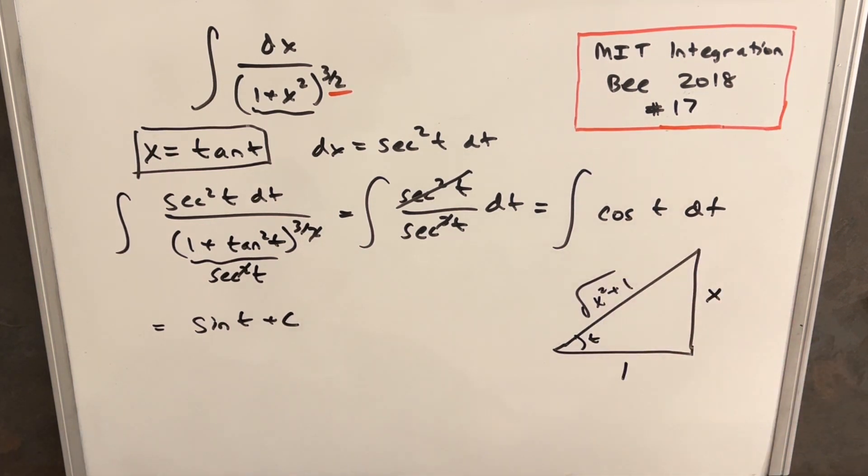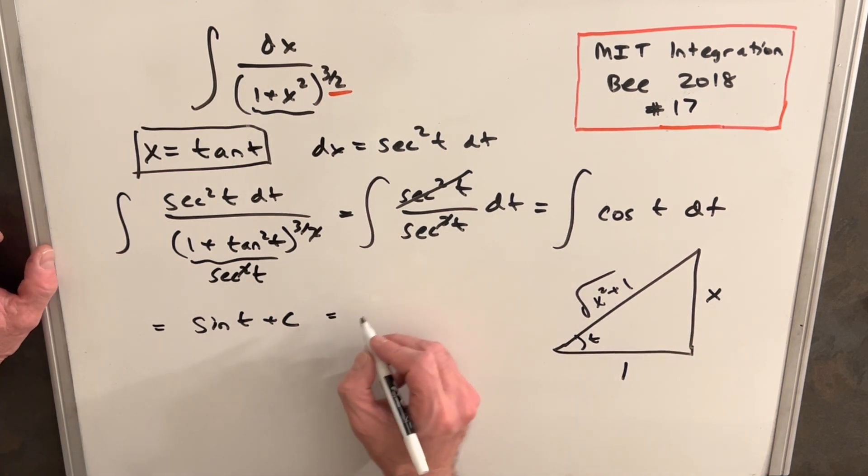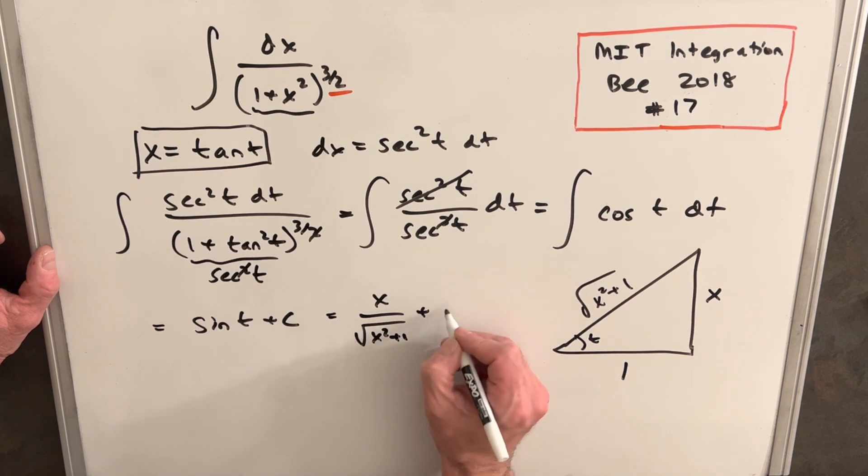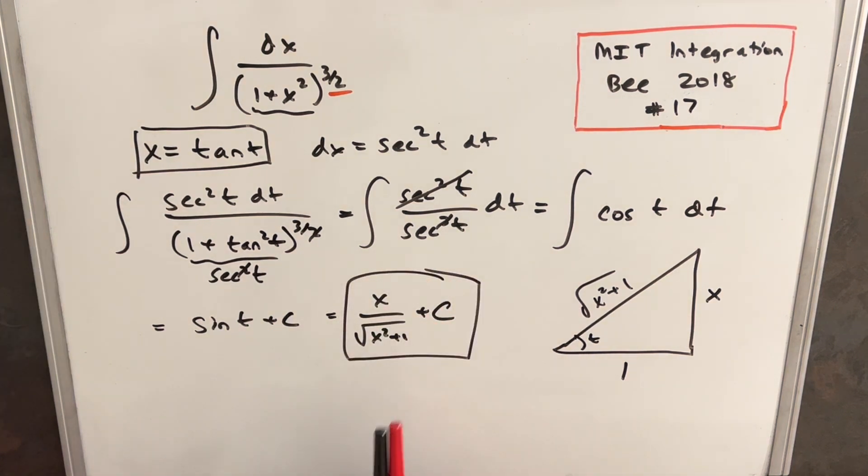Now that we have all the sides of the triangle, we can find any trig function that we want. So sine of t is going to be opposite over hypotenuse. So that's just going to be x over square root of x squared plus one. So we have x over square root of x squared plus one plus c. And that's it.